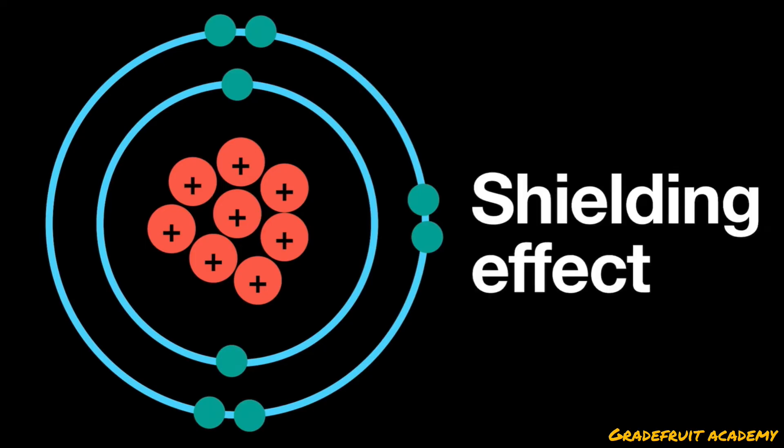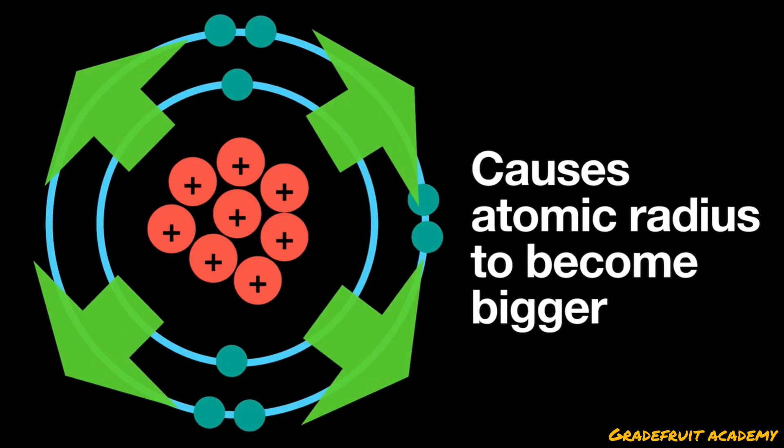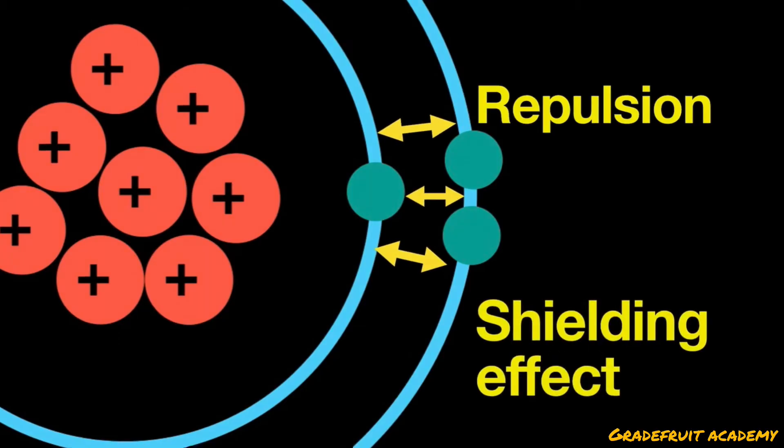On the other hand, the shielding effect in an atom has an expansionary effect which causes the atomic radius to become bigger. This happens because the electrons in the inner shells repel the electrons in the outer shells, hence forming a shielding effect which prevents them from experiencing the full effect of the actual nuclear charge.